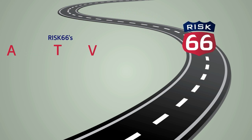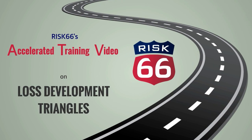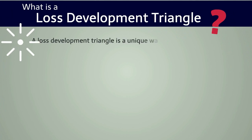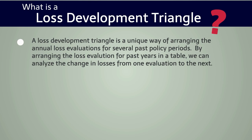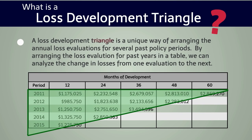Welcome to RISC-66 accelerated training video on loss development triangles. I'm Tim Coomer, let's get started. A loss development triangle is a unique way of arranging the annual loss evaluations for several past policy periods. By arranging the loss evaluations for past years in a table, we can analyze the change in losses from one evaluation to the next. The arrangement looks sort of like a triangle, and that's where we get the name loss development triangle.